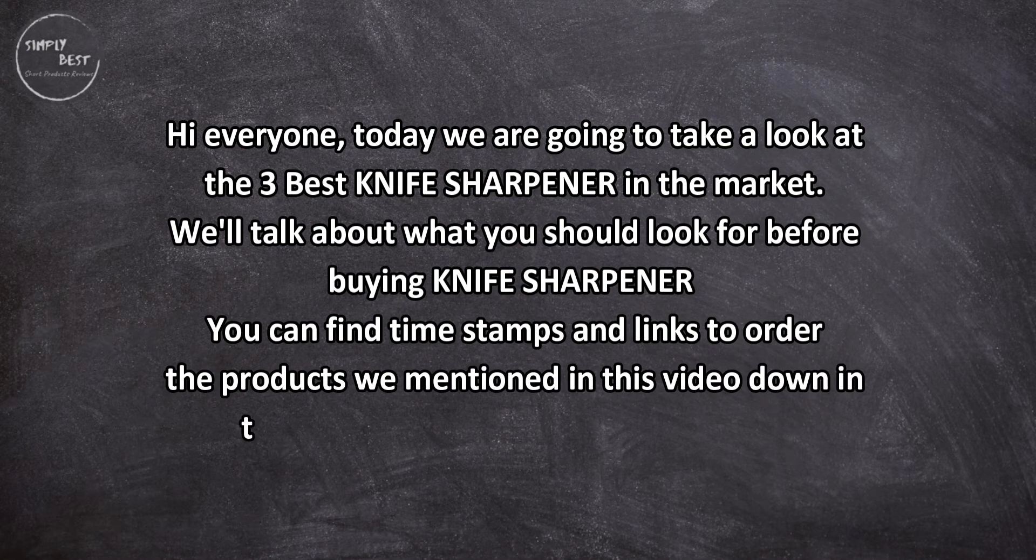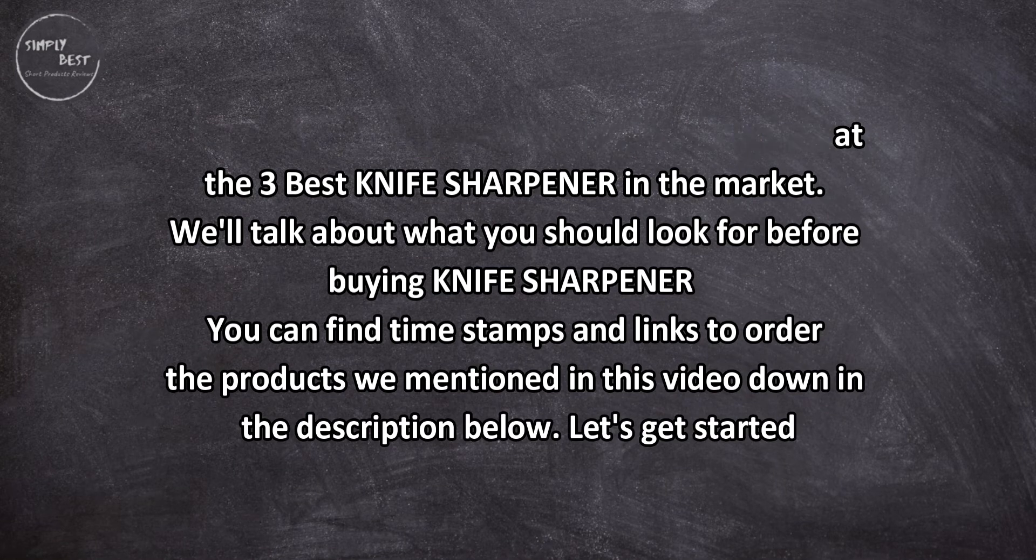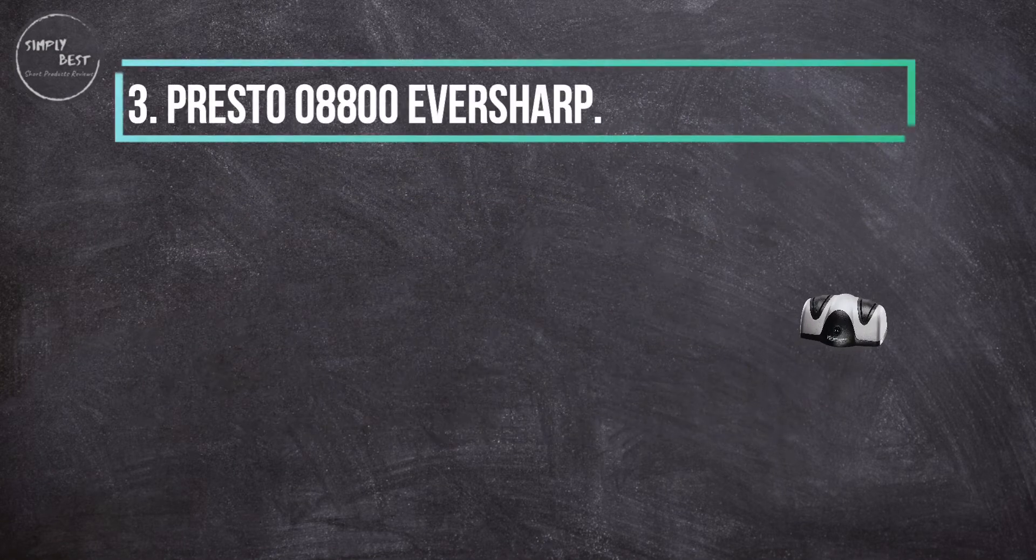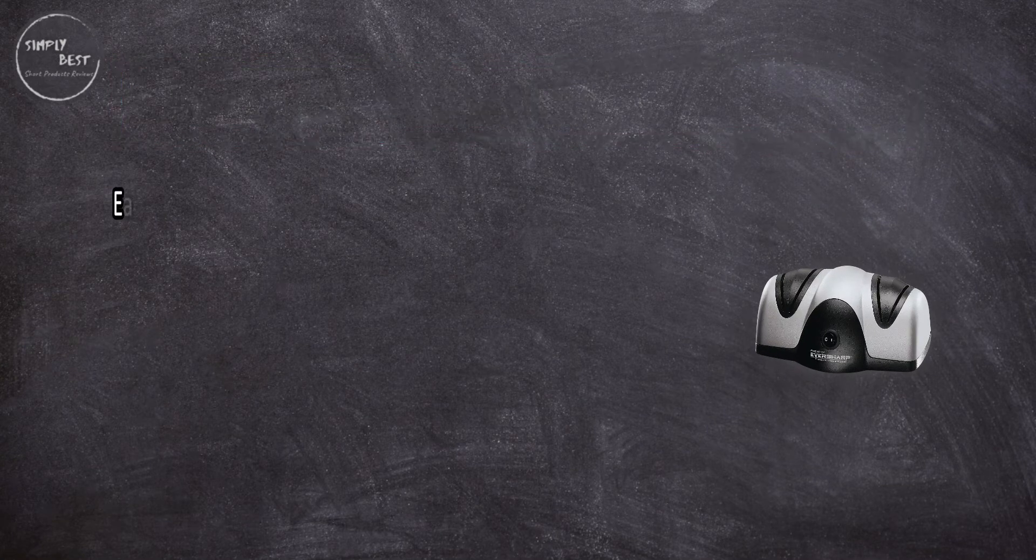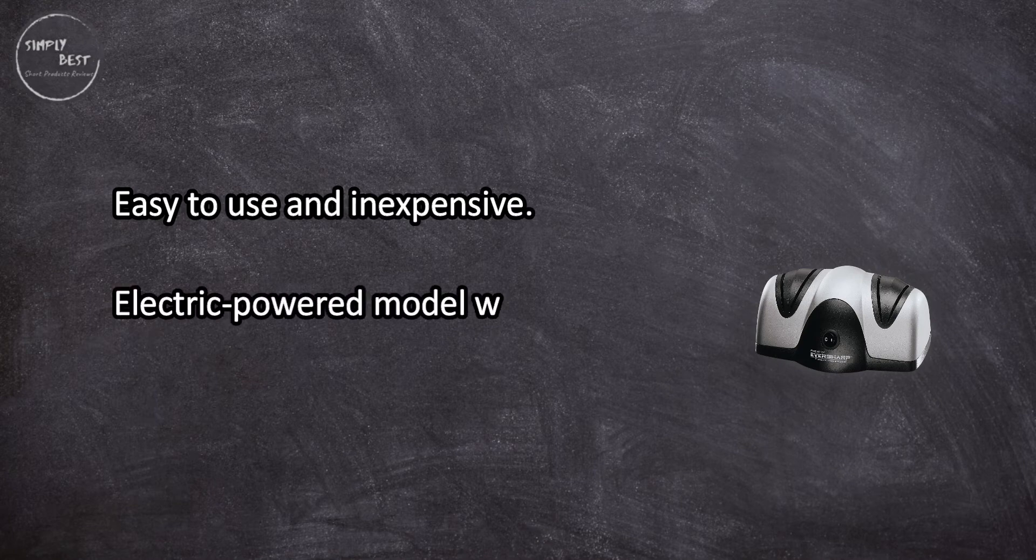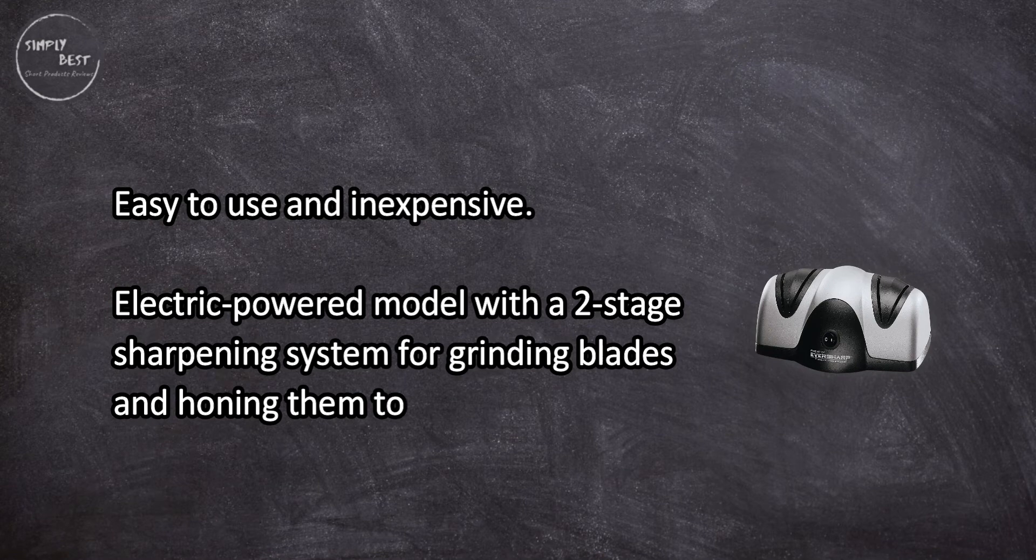Let's get started. At number three, Presto 08800 EverSharp. Easy to use and inexpensive, this electric-powered model features a two-stage sharpening system for grinding blades and honing them to a sharp, polished finish.